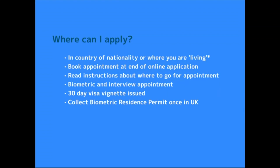Once your visa is granted, you'll be issued with a 30-day visa vignette — a sticker endorsed in your passport — within which you're expected to travel to the UK. Once you've entered the UK, you can collect your biometric residence permit (BRP), a card containing your biometric data, the conditions of your visa, how long it's valid, how many hours of work you're allowed, and your entitlement to NHS services. Keep this document very safe — replacing it is lengthy and costly. It's as important as your passport.